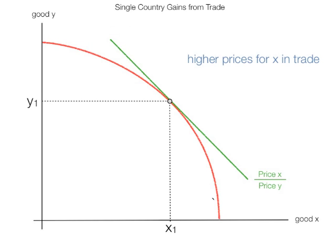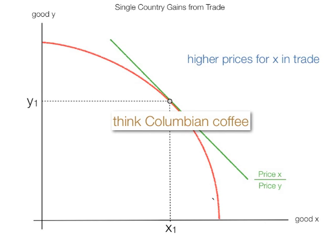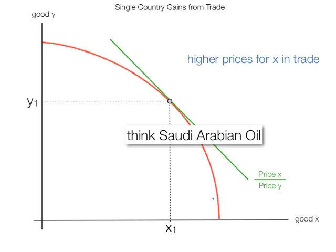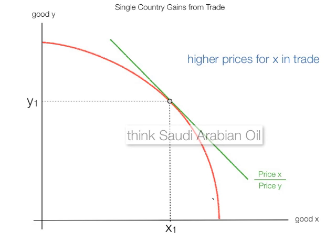Now imagine a country can sell X for a higher price than it can domestically. Think Colombian coffee or think Saudi Arabian oil. They can sell it abroad much more than they can sell it domestically. And this blue dot — the country actually switches resources and starts producing more of X than of Y, because they can sell X abroad and make money.